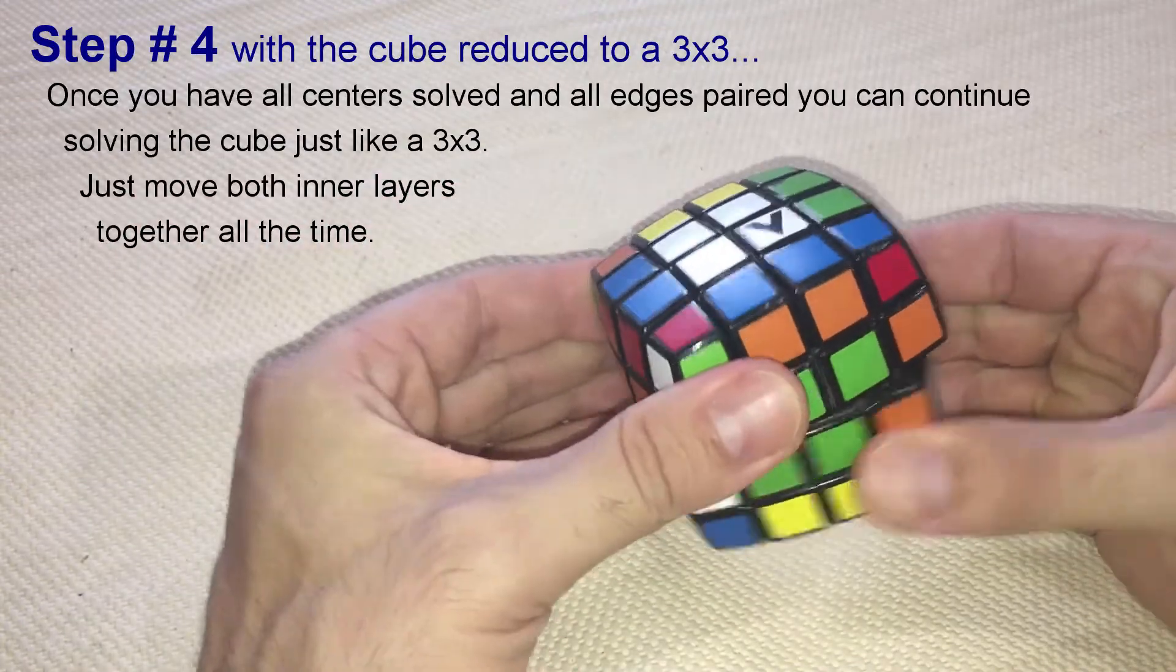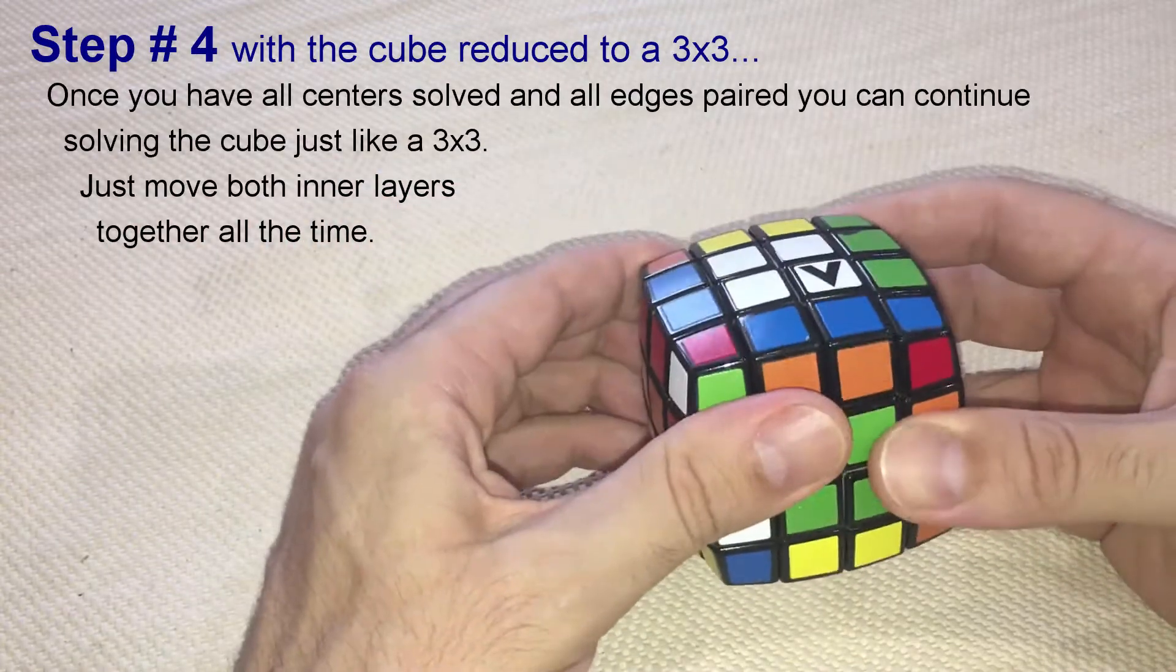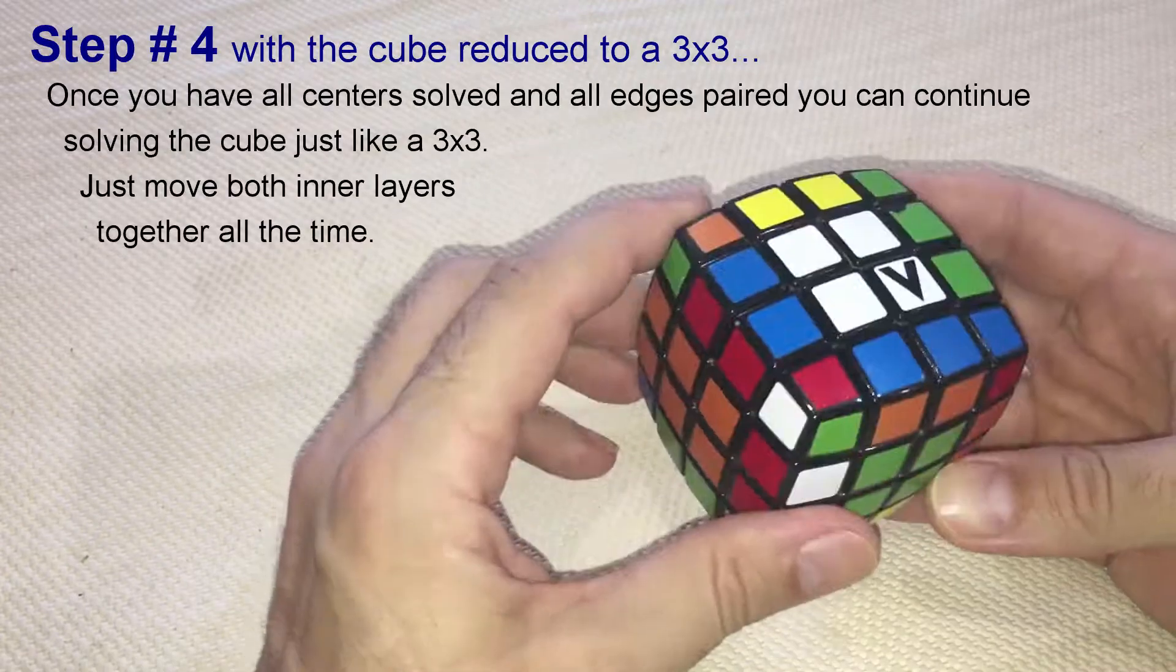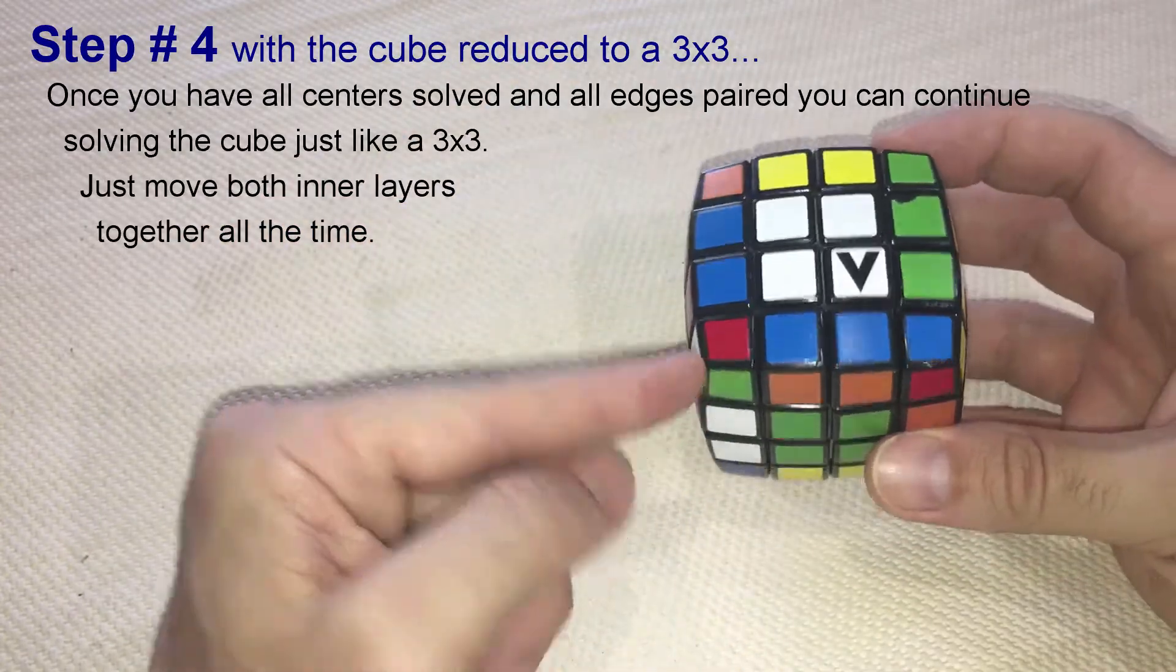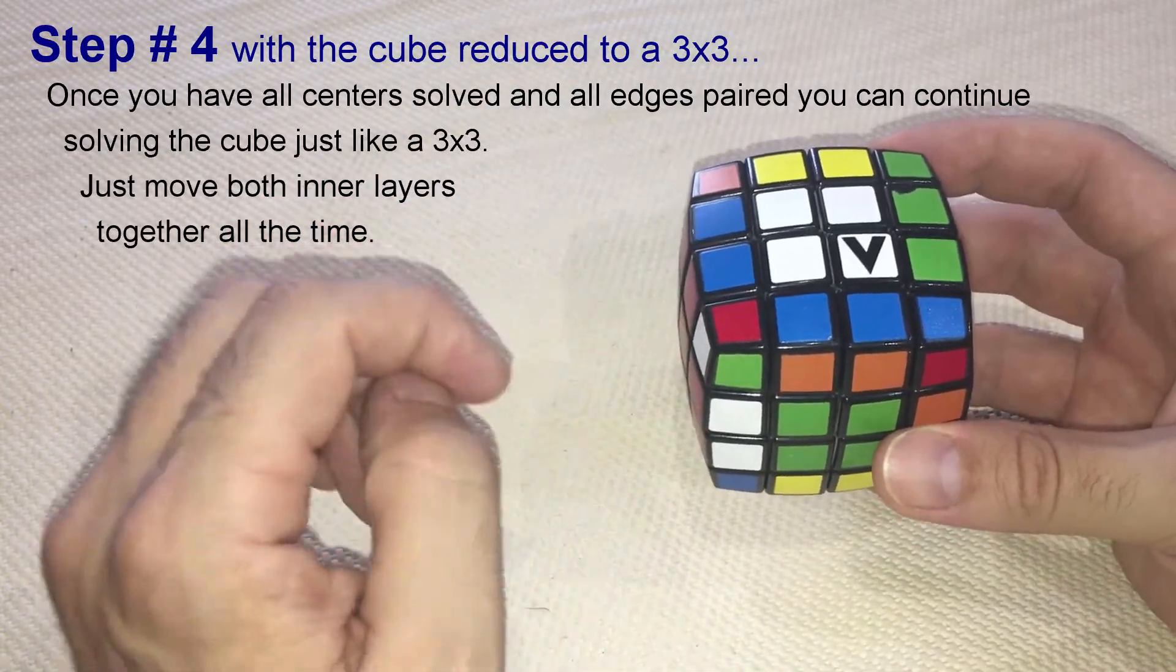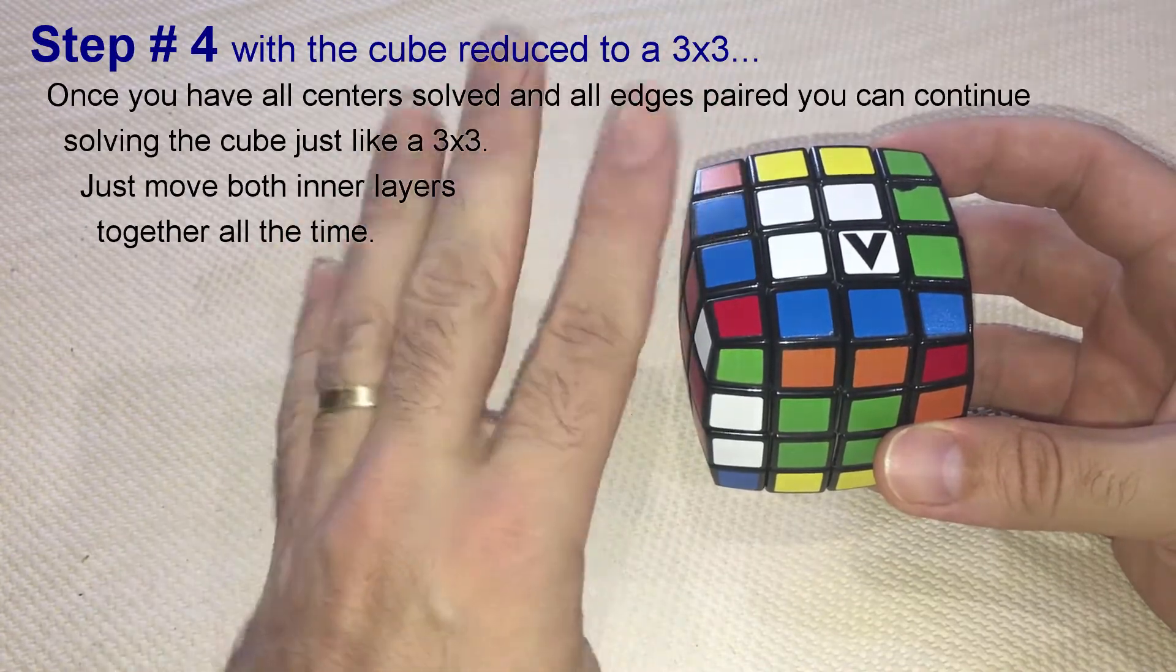Unfortunately, using our 3x3 knowledge to solve the 4x4 Rubik's Cube Revenge will bring us not one, but four possible outcomes.